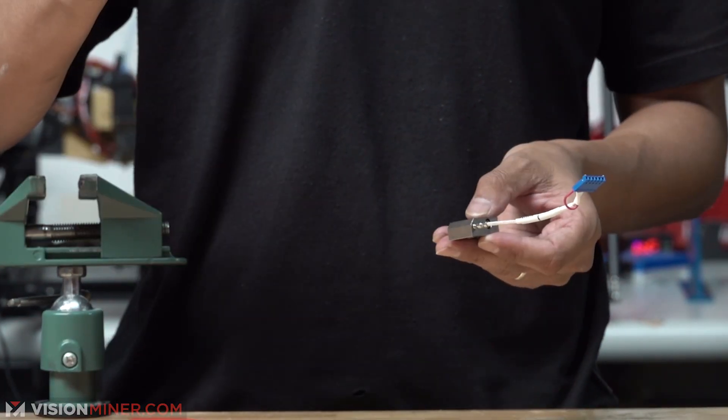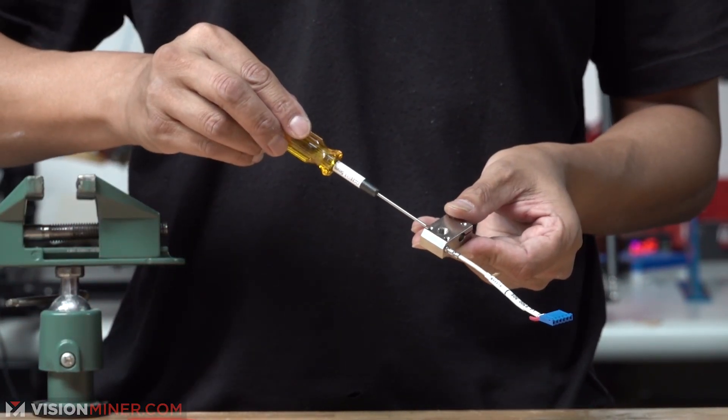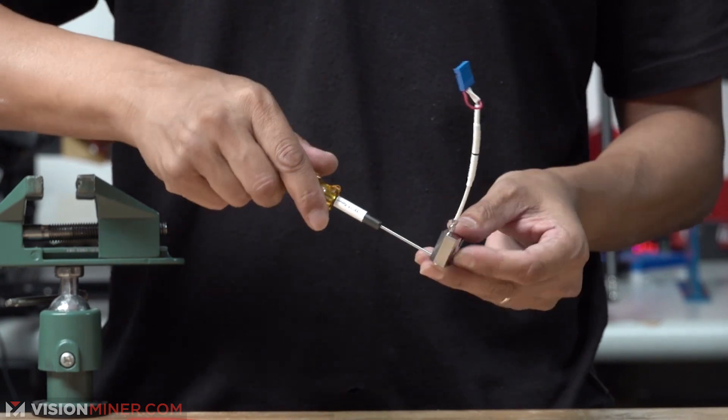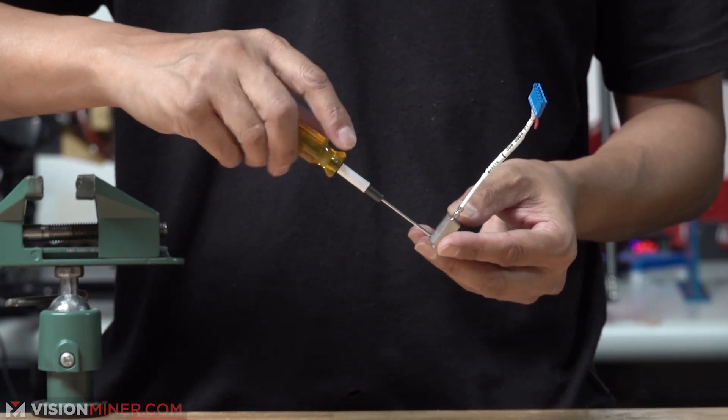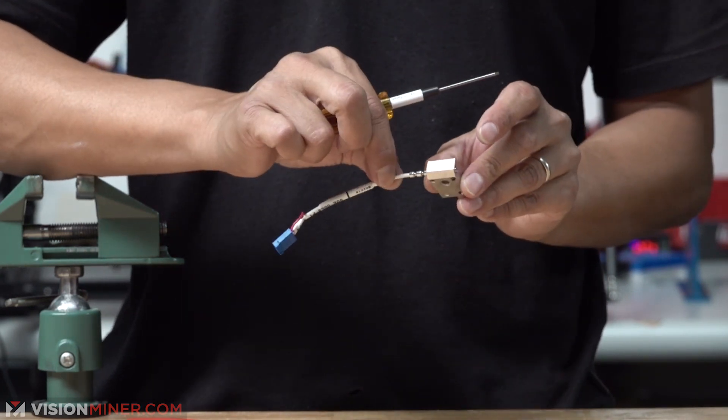Now for the thermostat. Use a 1.5 millimeter on this set screw right here. Simply turn and pull. It's that simple.